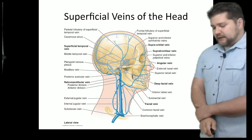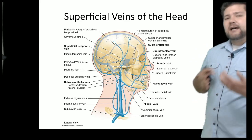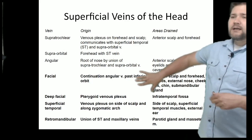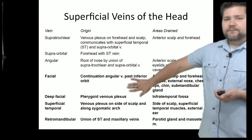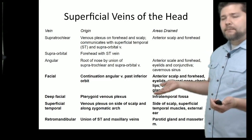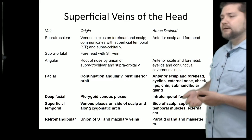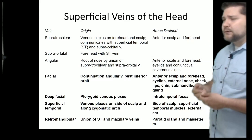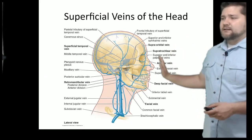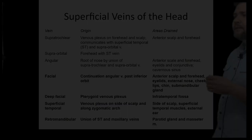Veins of the head have more collateral blood flow and redundancy than arteries, so we'll emphasize fewer of them. The key ones are the facial vein and superficial temporal vein. The superficial temporal vein and maxillary vein merge to form the retromandibular vein, which then merges with the facial vein to become the external jugular vein. The angular vein drains the anterior face, and the superficial temporal drains the lateral skull.